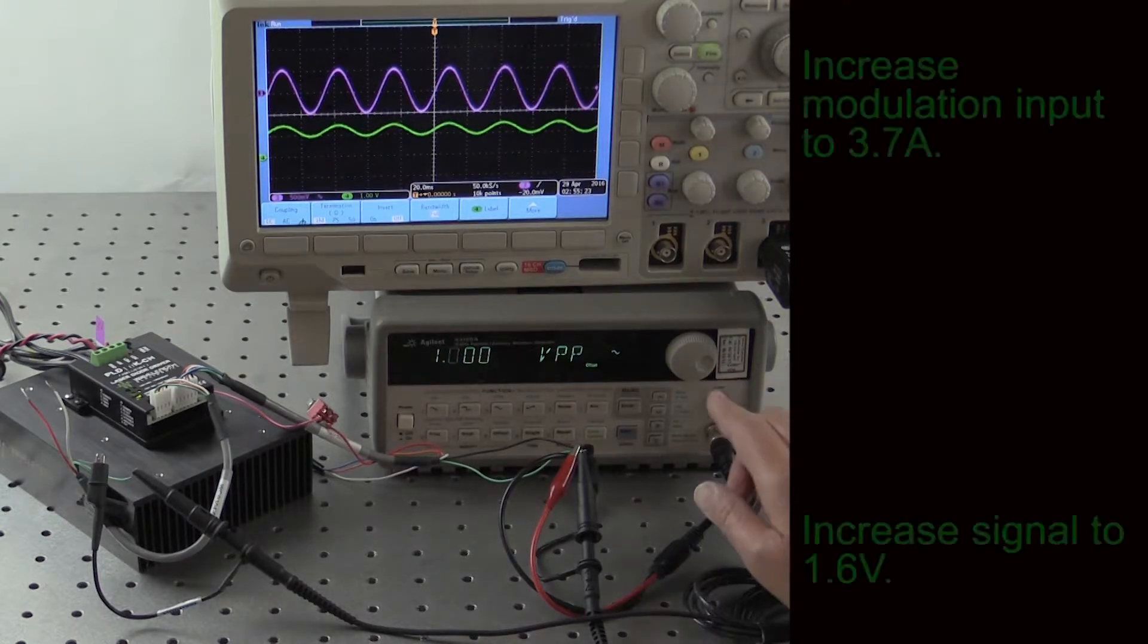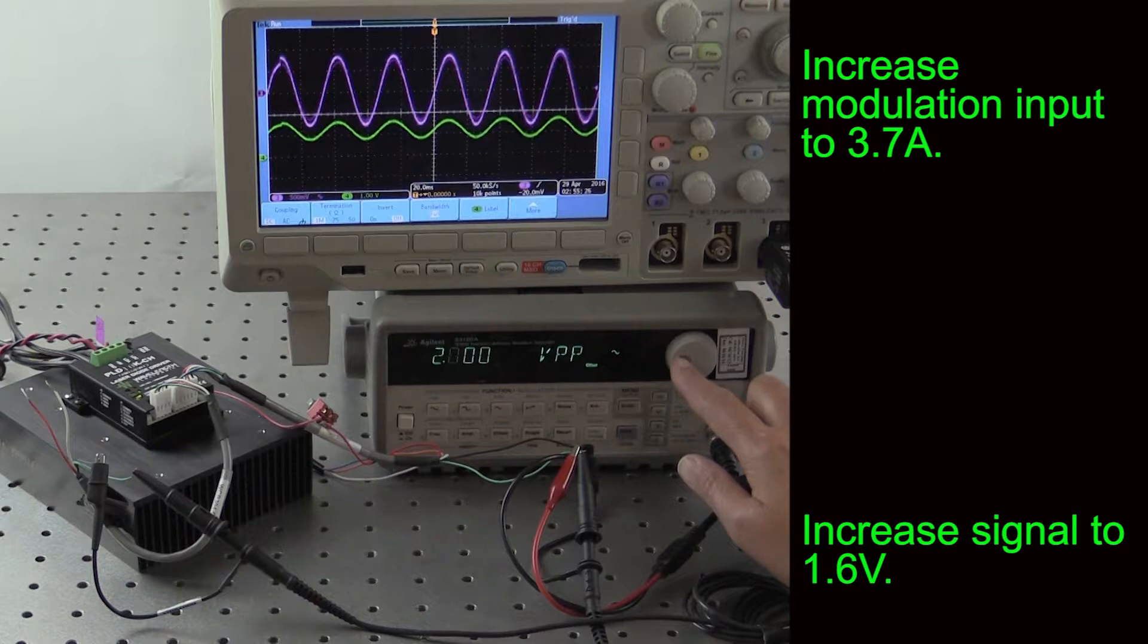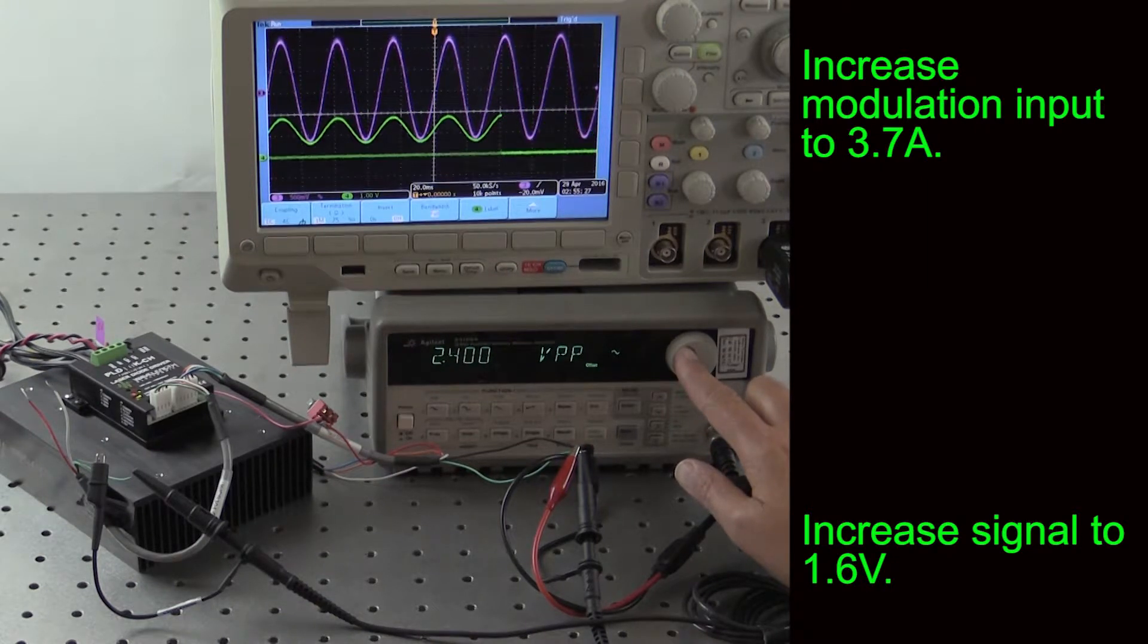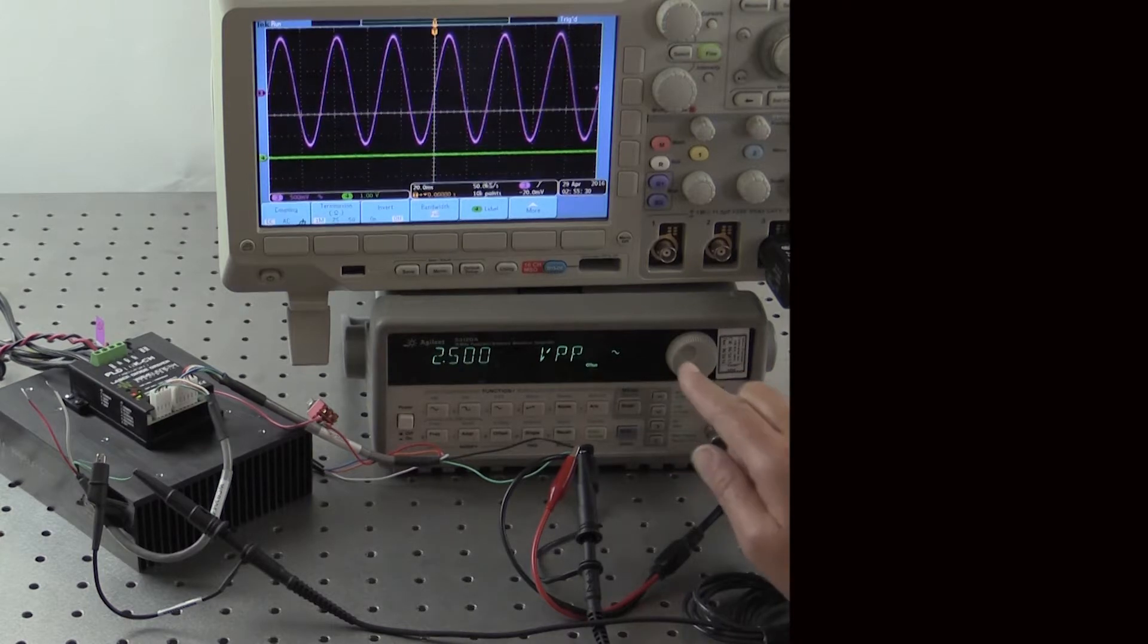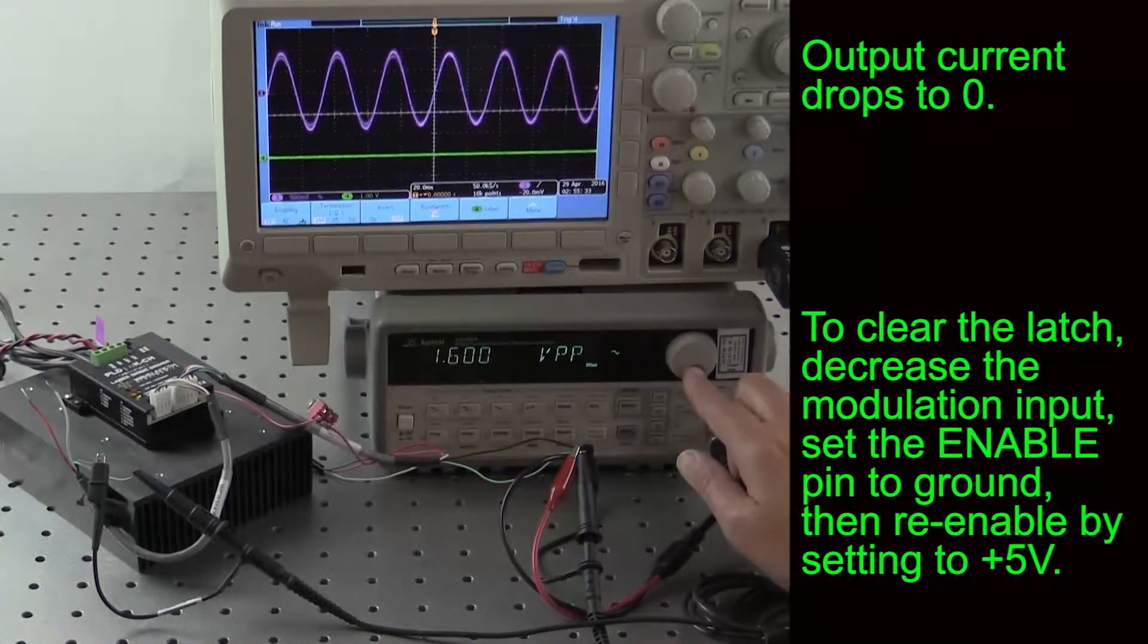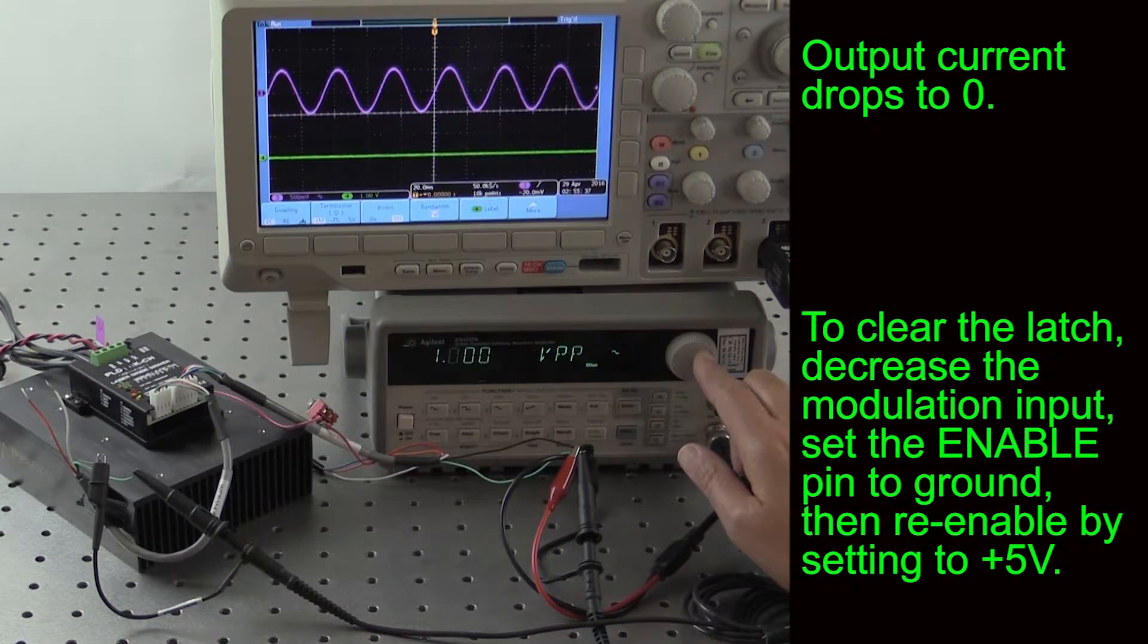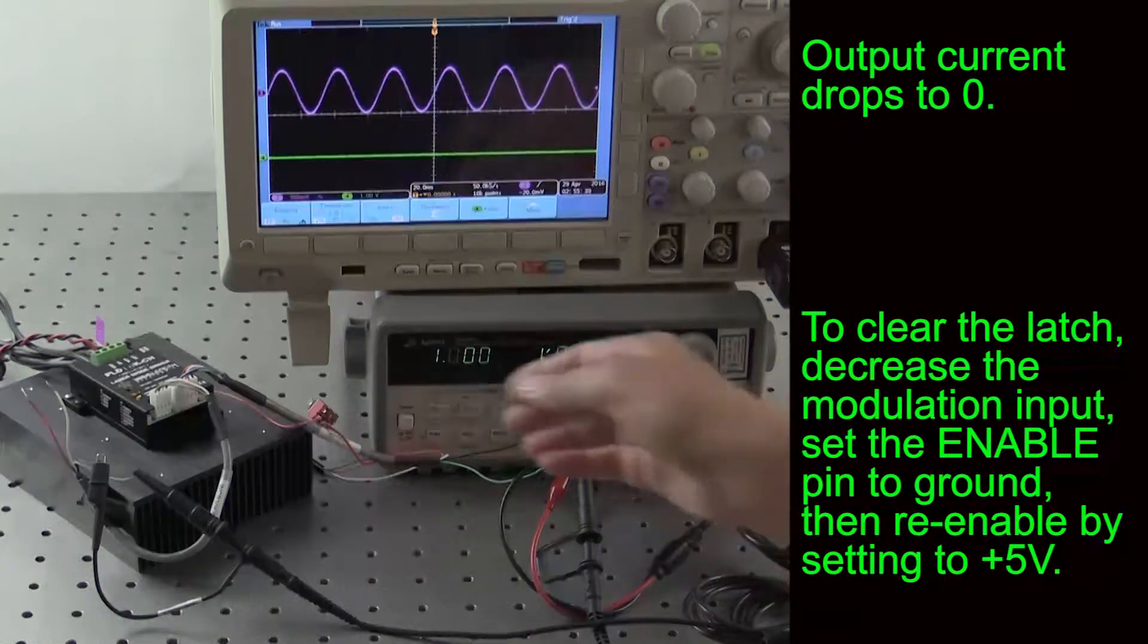To demonstrate the active current limit latching, let's increase our modulation peak-to-peak signal to trigger the limit of 8 amps. Note that the red current limit LED lights. Output current drops to zero. To clear the latch, decrease the modulation input, disable the enable pin, then re-enable by setting the pin to plus 5 volts again.